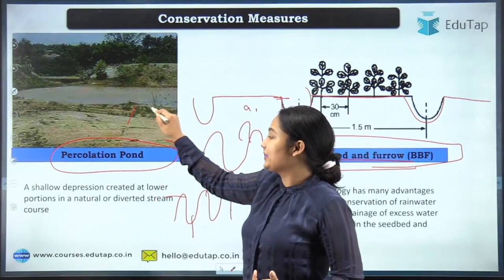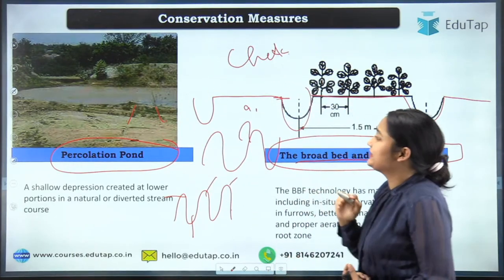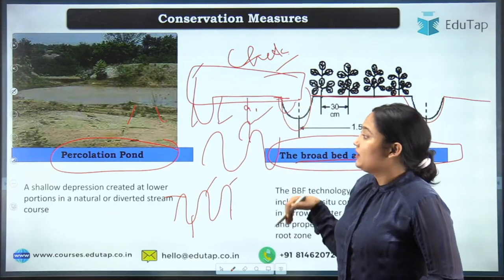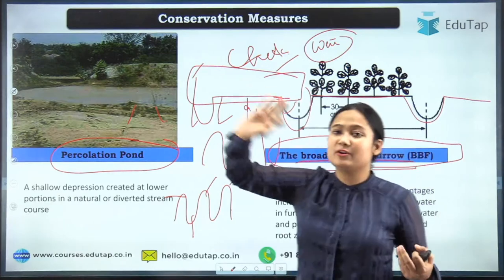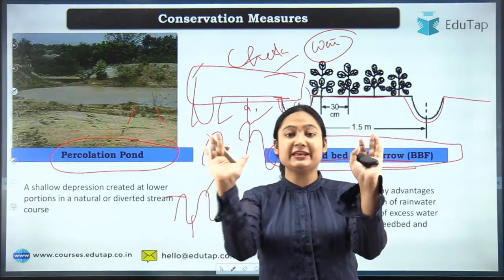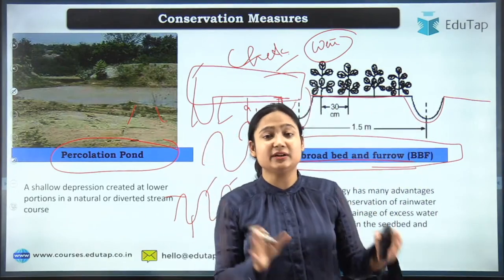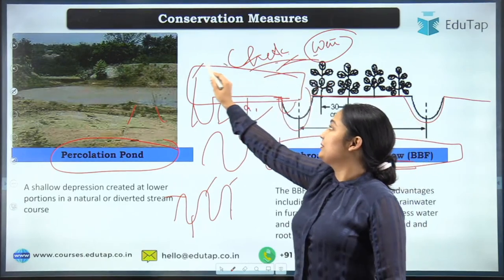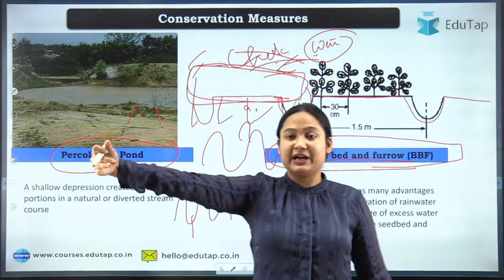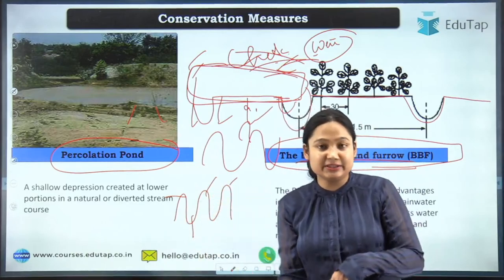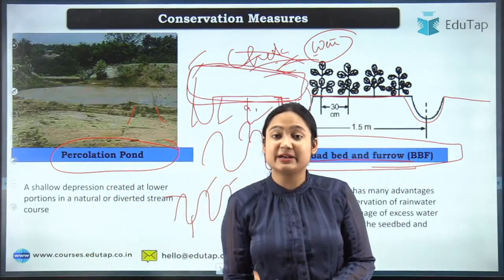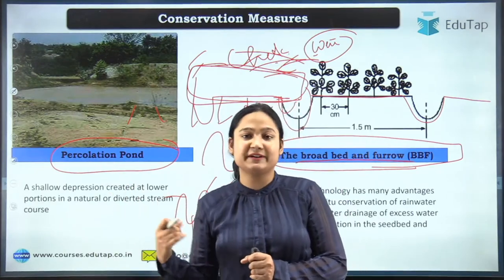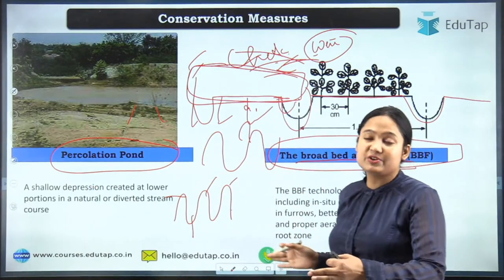The percolation pond method involves collecting rainwater in a pond and allowing it to stay. The surrounding soil absorbs the water gradually, recharging the water table. The check dam method involves constructing a small dam-like embankment to stop water flow. Collected water is absorbed over time; any excess is channeled away through drainage structures to prevent flooding.